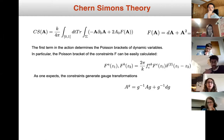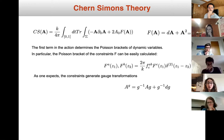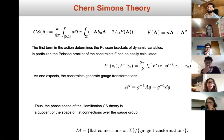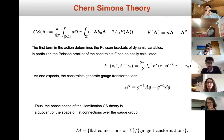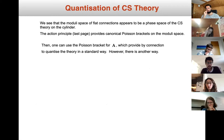We can calculate the Poisson bracket of the constraint F and also identify the constraint that generates gauge transformations of A. Having these ingredients, we find that the phase space of Hamiltonian Chern-Simons theory is the moduli space of flat connections over the gauge group — specifically, the moduli space M of flat connections on Σ modulo all gauge transformations, which comes directly from this Hamiltonian form.